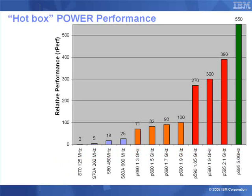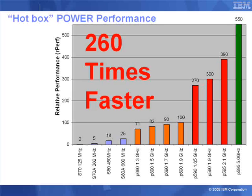Then we run up through the Power 4, Power 5, and now the Power 6 machines. The Power 6 595 this year is rated at 550 RPERFs. We can see this is an enormous growth in the power of these computers. This performance growth is actually 260 times over this 12 years, which is quite impressive.